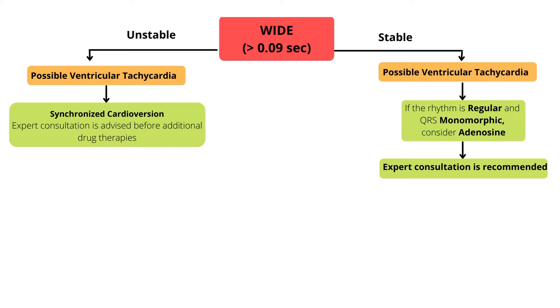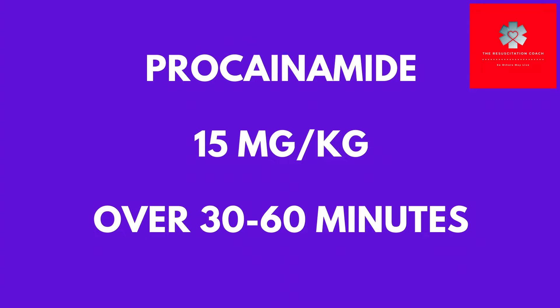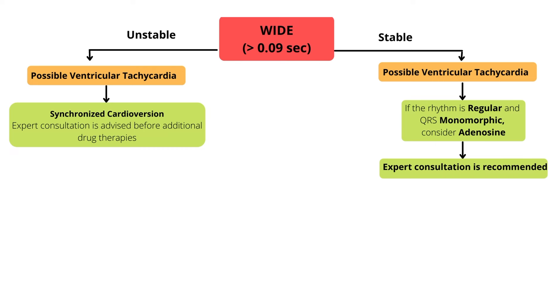For pharmacological conversion, establish vascular access and consider administering one of the following medications. Amiodarone: IV or IO dose is 5 mg per kg over 20 to 60 minutes. You can also consider procainamide: IV or IO dose is 15 mg per kg given over 30 to 60 minutes. Seek expert consultation when giving amiodarone or procainamide. Do not routinely administer amiodarone and procainamide together or with other medications that prolong the QT interval. If these initial efforts do not terminate the rapid rhythm, re-evaluate the rhythm. If not already administered, consider adenosine, because a wide-complex tachycardia could be SVT with aberrant ventricular conduction.